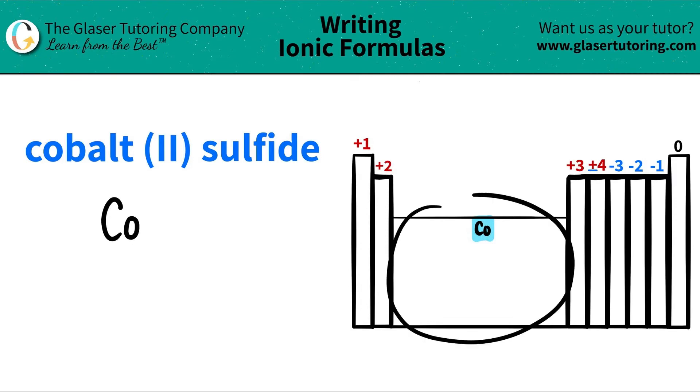Now the thing with transition metals is that they have multiple charges. We need the charges when we write the formulas. But for transition metals, they will always give you a Roman numeral. The Roman numeral is the charge of the metal. So in this case, cobalt would be a +2. Metals are always positive charges.